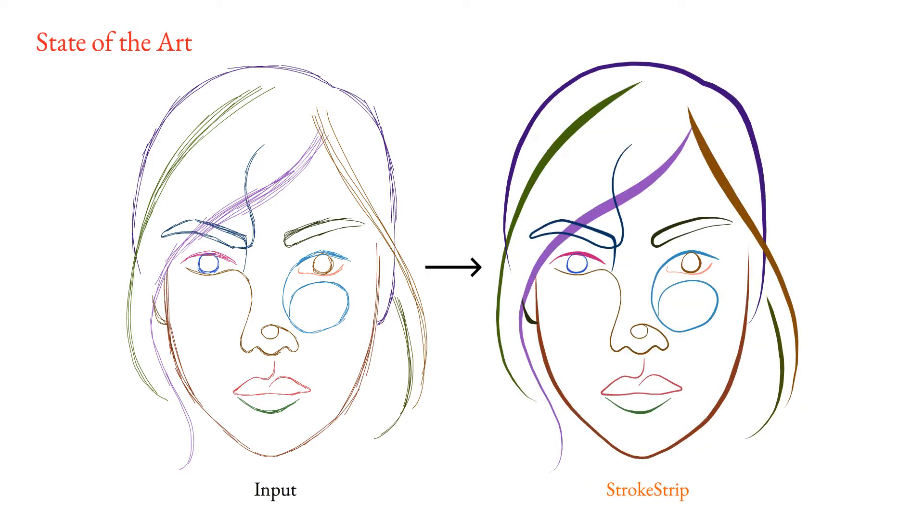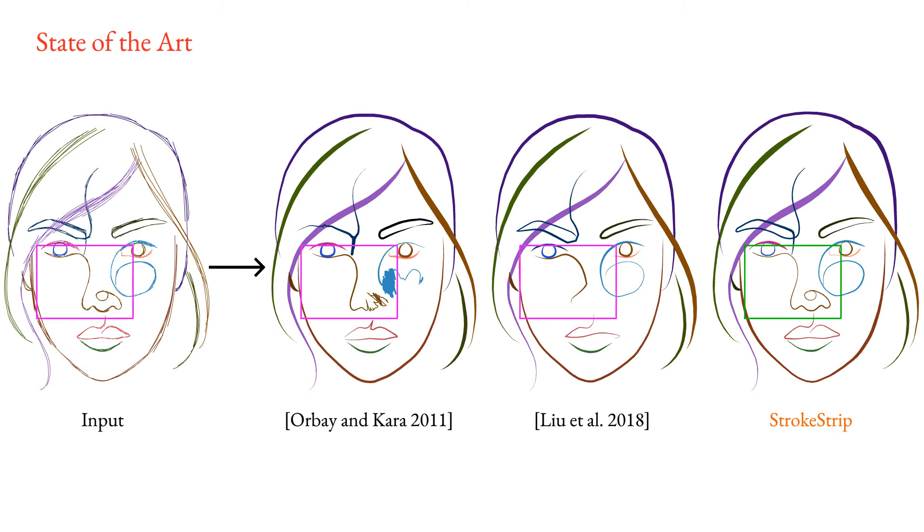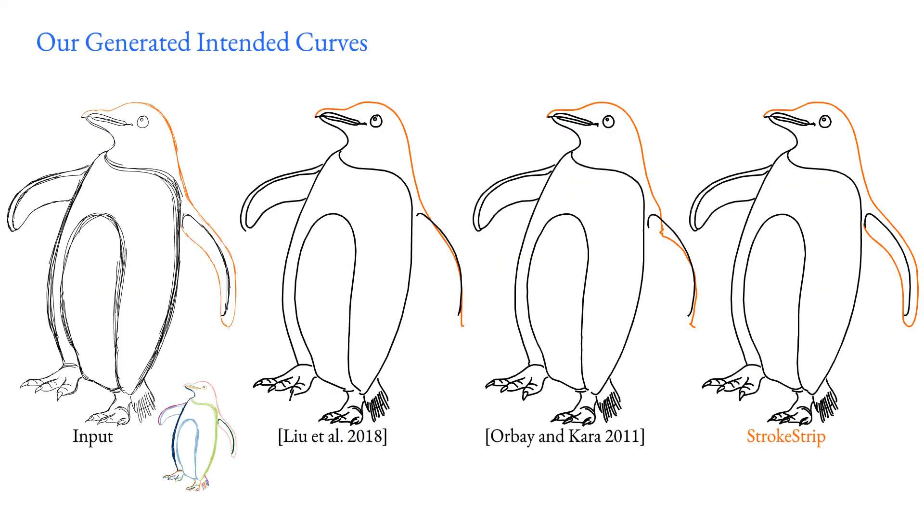We present StrokeStrip, a robust new method for fitting intended curves to vector-format stroke clusters on which prior methods fail. It generates intended curves consistent with viewer expectations across a vast range of input stroke cluster configurations.